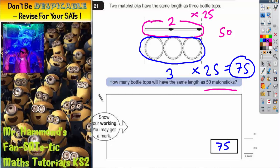If you want a slightly neater way of actually setting it out, you could do this. You can put matchsticks on the left, bottle tops on the right, and you could say that you're going from two matchsticks down to 50 matchsticks and you're going from three bottle tops down to however many bottle tops you're trying to make.